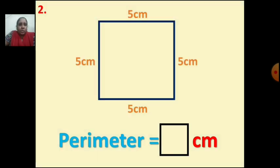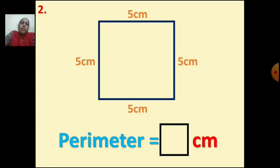Now let us see the second question. The shape of the figure is a square. A square has all 4 sides equal. The length of one side given here is 5 cm. To find the perimeter of a square, you add the length of all 4 sides: 5 plus 5 is 10, 10 plus 5 is 15, and 15 plus 5 is 20. The perimeter of the figure is 20 cm.